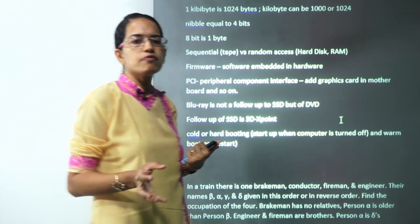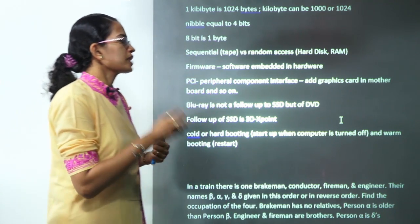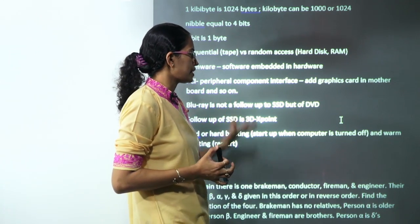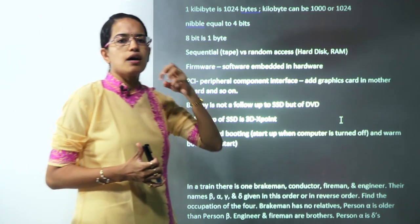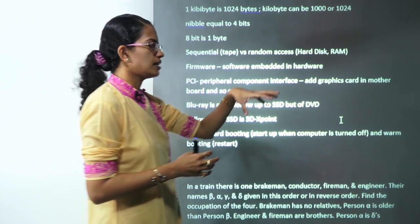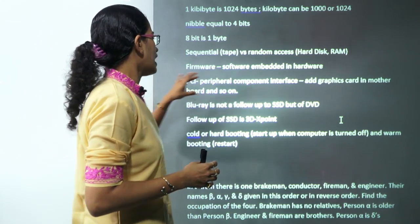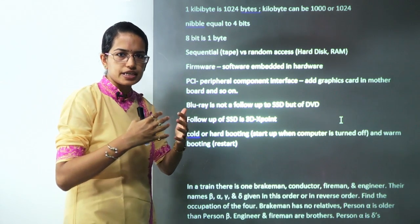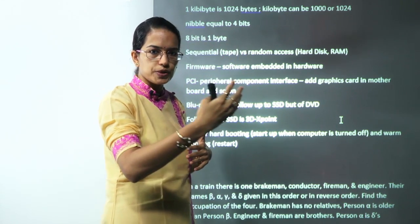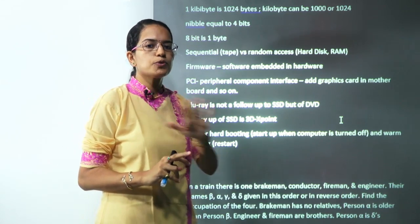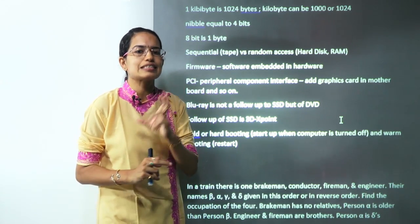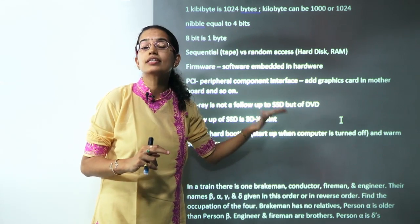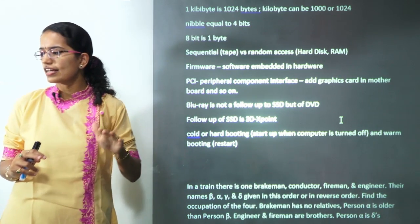What is firmware? Firmware is basically software that is embedded in the hardware, and it is known as firmware. Next is PCI — Peripheral Component Interface. On the motherboard, you can add graphic cards or other slots with the help of PCI. Regarding storage: the follow-up of DVD is Blu-ray. Note that Blu-ray is not a follow-up of SSD. SSD is a hard disk, and the follow-up of SSD is 3D X-Point — a recent and therefore very important technology.